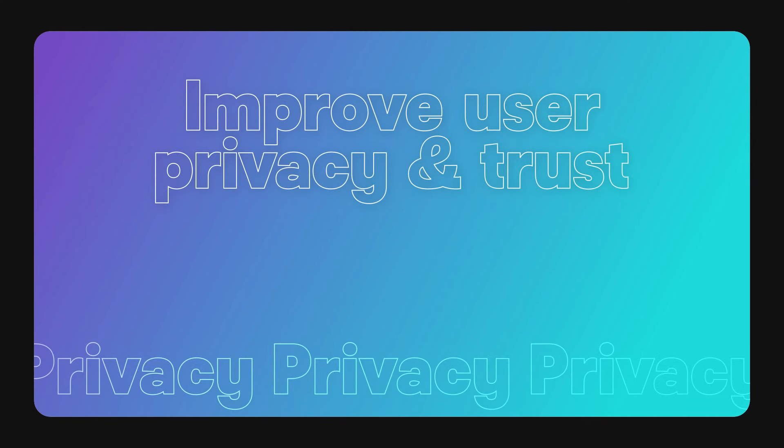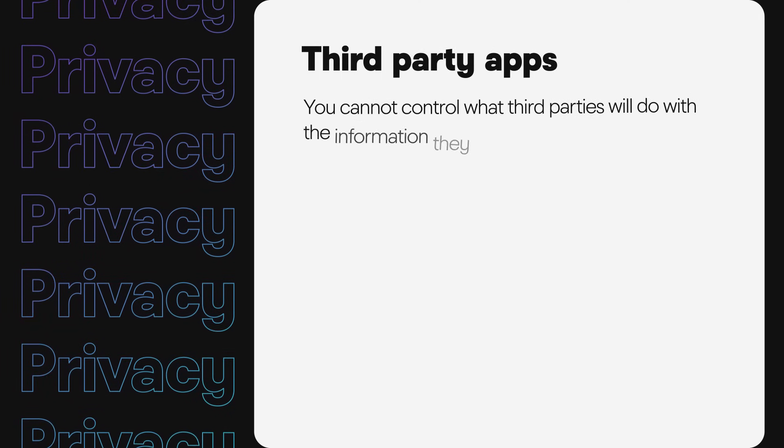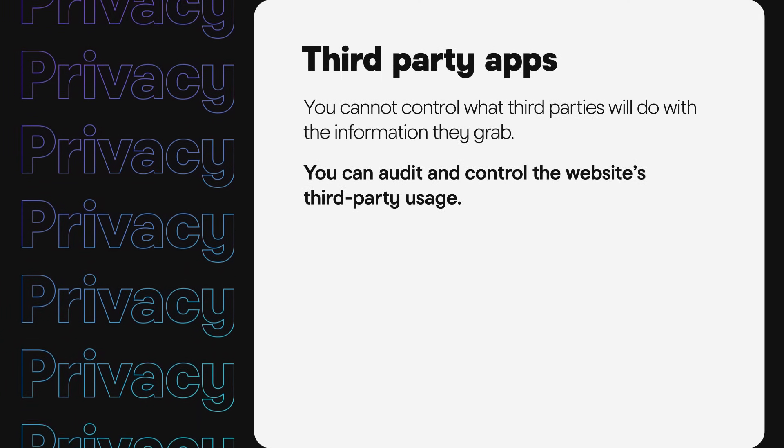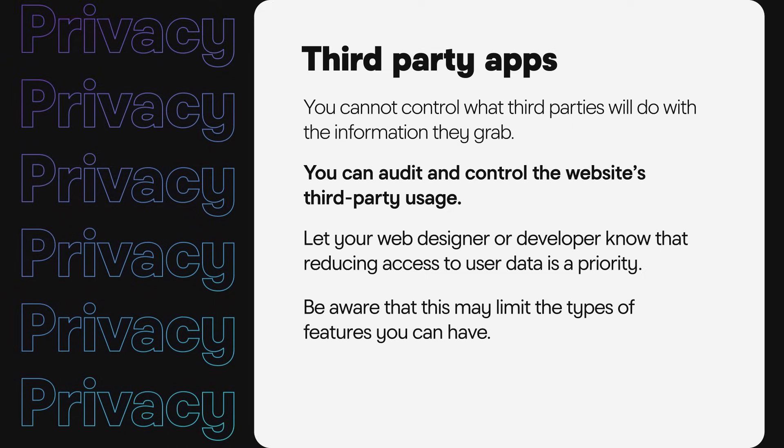The last aspect to think about regarding user data and trust is the use of third-party apps. It is inevitable that you will use third-party apps to create features and functionalities that help capture leads, convert customers, and engage visitors online. So ask yourself, are you unknowingly sharing user information from your website? Chances are, the answer is yes. Therefore, many privacy policies will mention the use of third-party apps on the site, stating that the owner of the website cannot control what third parties decide to do. You can't control what third parties will do with the information they grab from users on your websites, but you can audit and control the website's third-party usage. If sharing data is a concern for your website visitors, let your web designer or developer know that reducing access to user data is a priority. Be aware that this may limit the types of features that you can have.